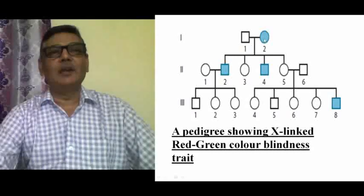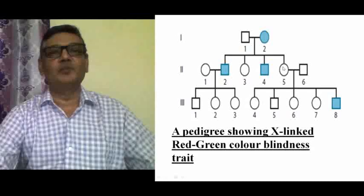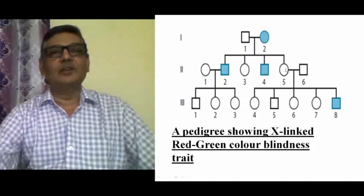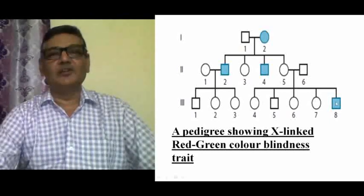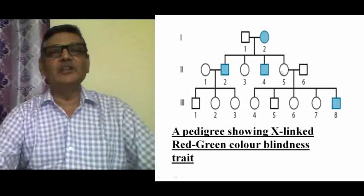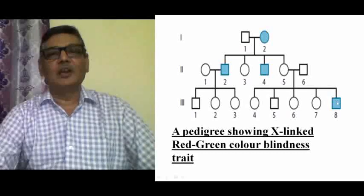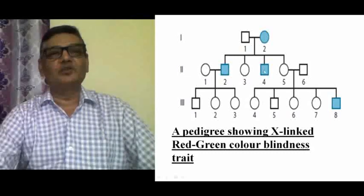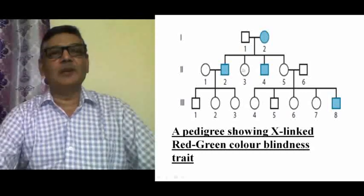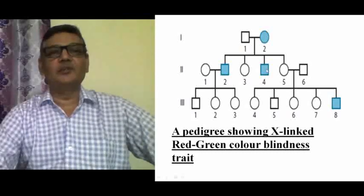The two daughters in the second generation are carriers, having received the normal X chromosome from the father and the mutant X chromosome from the mother. In the third generation, individual 38 is colorblind because he received the mutant allele from his carrier mother. Observing all three generations, we find that color blindness is found predominantly in the male population.